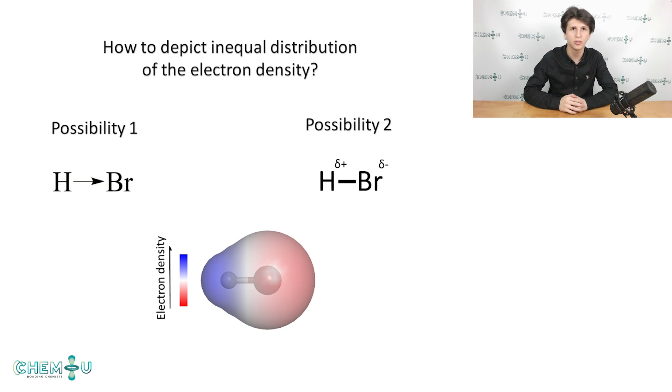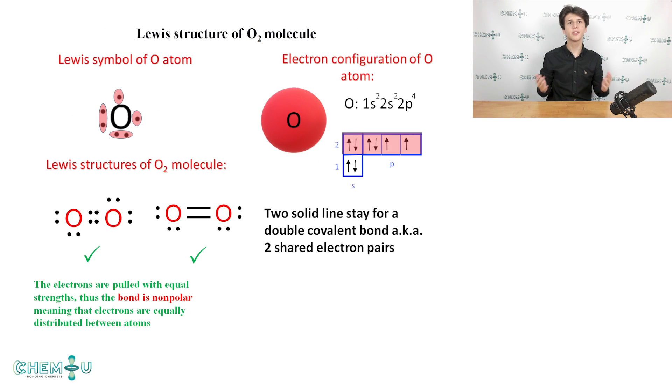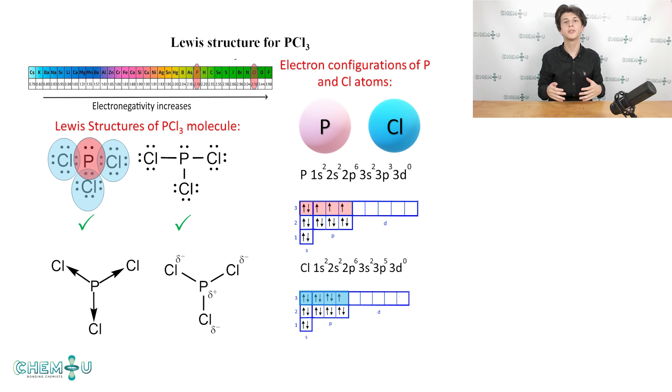Let's illustrate the concept of bond polarity using the previously discussed molecules. Here's an oxygen molecule O2. It consists of the same atoms with equal electronegativity. So the electrons are pulled with equal strength, thus the bond is non-polar, meaning that electrons are equally distributed between atoms.